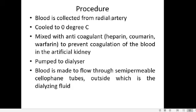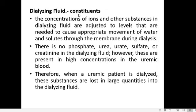Blood is collected from the radial artery of the patient, cooled to 0°C, and mixed with an anticoagulant such as heparin, coumarin, or warfarin to prevent clotting inside the artificial kidney. It is then allowed to pass through the dialyzer, where blood flows through semi-permeable cellophane tubes while the dialyzing fluid surrounds the outside of the cellophane tube within the dialyzer equipment.